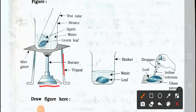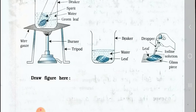See the figure here. A Bunsen burner is there, with a tripod. On the tripod a wire gauze is placed, and on that wire gauze a beaker is there. Inside the beaker a test tube is placed. In the test tube there is spirit, and inside the spirit a green leaf is placed. The beaker contains water. Take a glass piece and with the help of a dropper put iodine solution on the leaf.